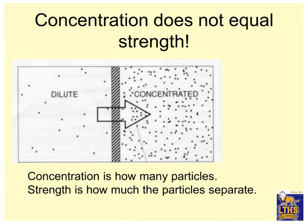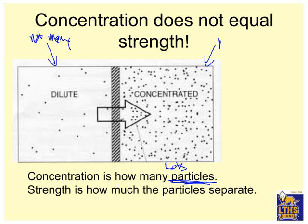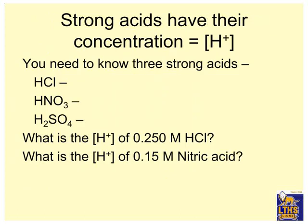Concentrated means something else. Concentrated means how many particles — specifically, lots of particles. Strength is how much they separate. In this case, this is dilute because there's not many. And this is concentrated because there are many. Notice how this does not care if it's split apart or not — it's just how many there are.